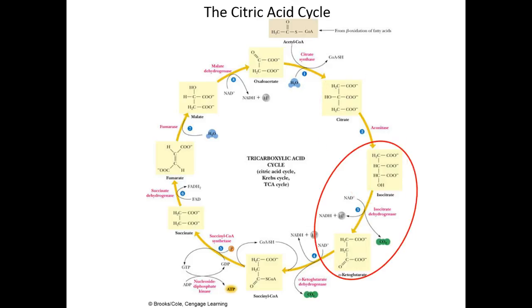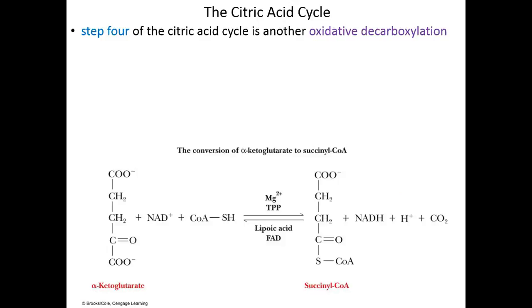Step three of the citric acid cycle: the oxidative decarboxylation of isocitrate into alpha-ketoglutarate, resulting in the release of carbon dioxide and the reduction of NAD to NADH + H. Step four is another oxidative decarboxylation. Once again, we steal electrons and protons from alpha-ketoglutarate, and once again that theft results in decarboxylation of that molecule. Alpha-ketoglutarate becomes succinyl-CoA; NAD+ is there waiting for the electrons that it will receive; and carbon dioxide is released. This is the last carbon dioxide from glucose.